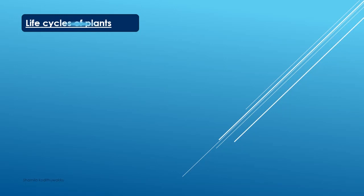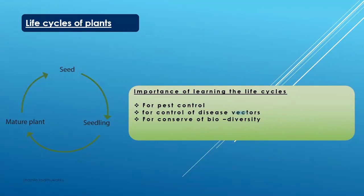Now, life cycles of plants. Not only animals, plants also have life cycles. It has three stages: seeds, seedlings, and mature plants.